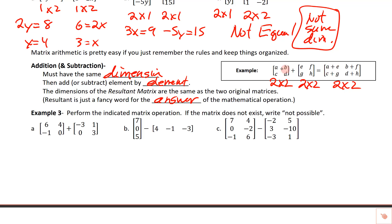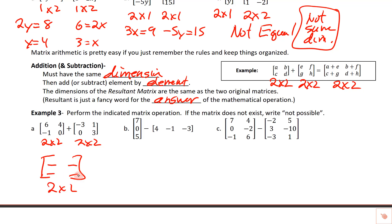Here we're adding a two-by-two to a two-by-two, and we end up with a two-by-two. First row, first column added to first row, first column gives the answer's first row, first column. In practice: six plus negative three gives three; four plus one gives five; negative one plus zero gives negative one; and zero plus three gives three.